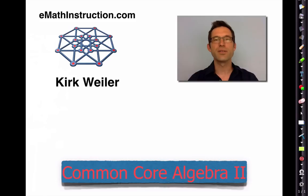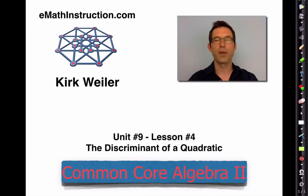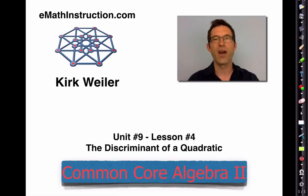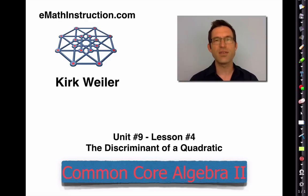Hello, I'm Kirk Weiler, and this is Common Core Algebra 2 by eMath Instruction. Today we'll be working on unit number nine, lesson number four, the discriminant of the quadratic. In the last lesson, we saw how quadratic equations can have complex roots with non-zero imaginary parts — roots that have an i in their solutions. We also saw how that tied into the x-intercepts of a parabola and what's known as the discriminant of a quadratic. Today we're going to really dig into how the discriminant forces on us the nature and the number of the roots of a quadratic.